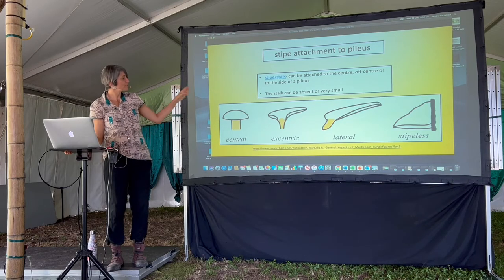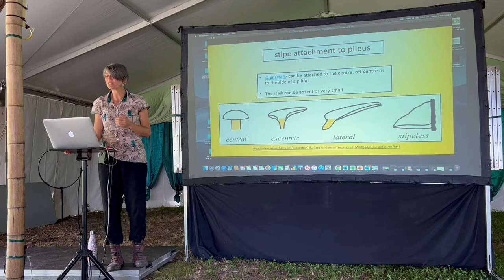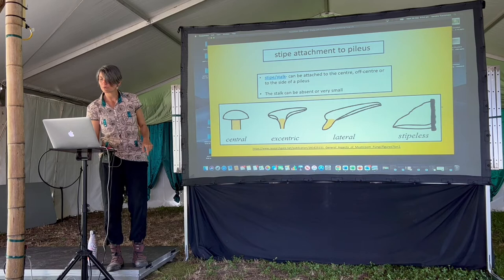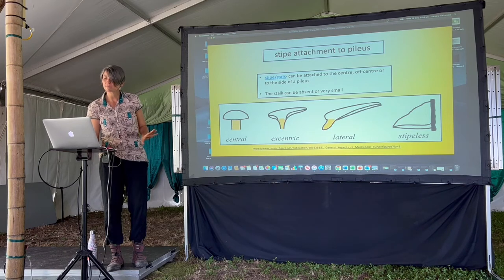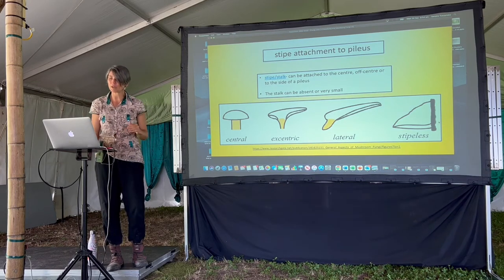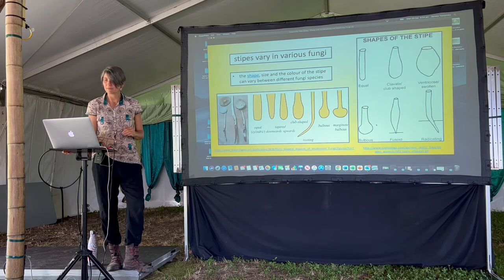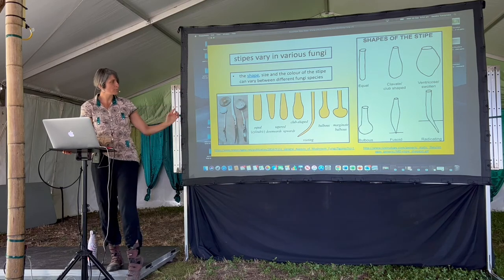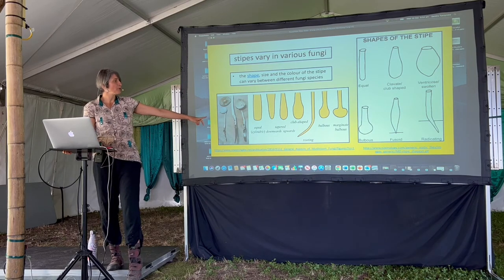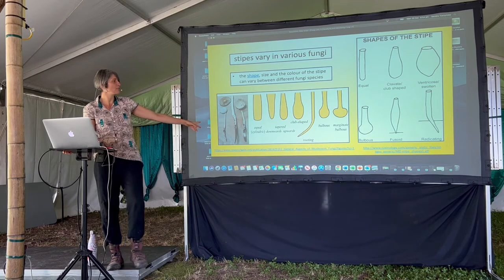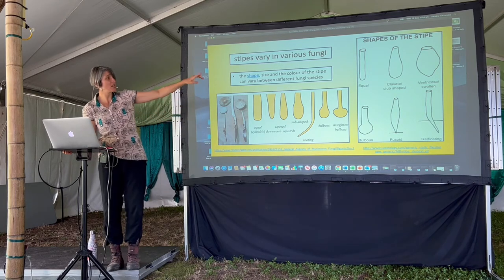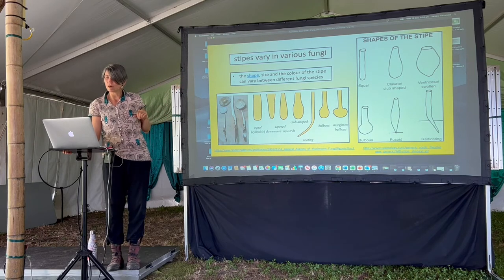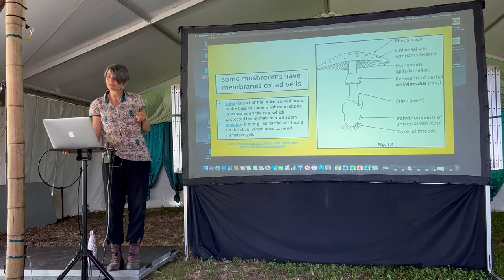The attachment of the stem to the cap also varies. Stipeless means a bracket — no stem, just attached to whatever surface it's growing on. The bottom, as I mentioned, can tell you a lot about which fungi it is based on the stipe shape — whether it's fat, thin, or bulbous. Some have membranes; Amanitas are mycorrhizal fungi growing in that symbiotic relationship with partner trees, and they have gorgeous little skirt-like ornamentations. You can tell it's an Amanita when it has a skirt.